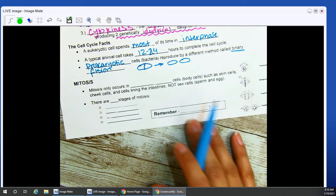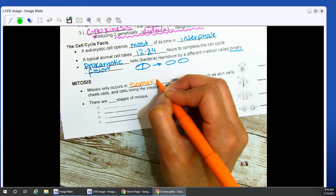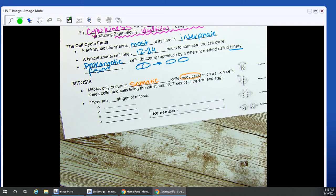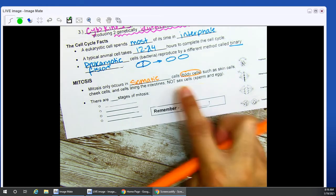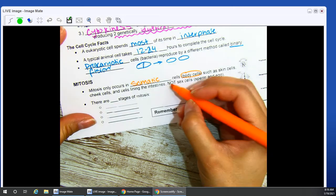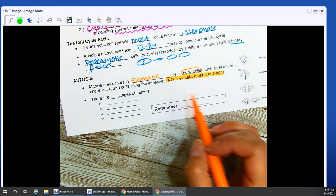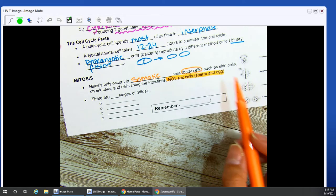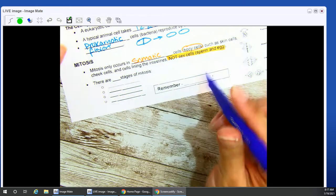Mitosis only occurs in somatic cells, somatic cells. These are your body cells. This includes skin cells, cheek cells, lining of your intestines, anything you can think of that is not a sex cell. You only have two options for your sex cells, either sperm or egg. So anything that is not sperm or egg. Liver cells, anything you can find in your eyeballs, hair cells. Anything that is not sperm and egg, those are all somatic cells. Those are all your body cells. Those can do mitosis.